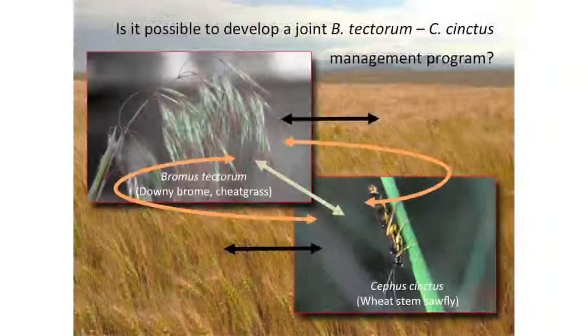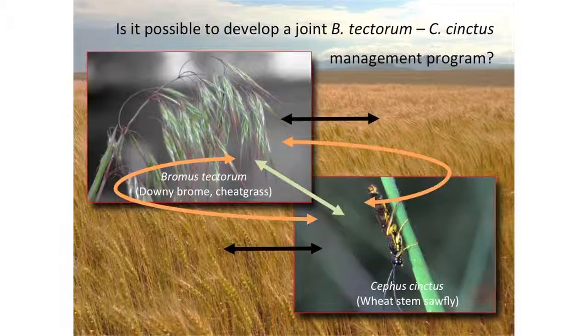We were working with the two most important pests that a farmer will have in winter wheat in Montana and in the Great Plains regions. From the weeds perspective, it's cheatgrass — downy brome. From the insect perspective, it's the wheat stem sawfly.